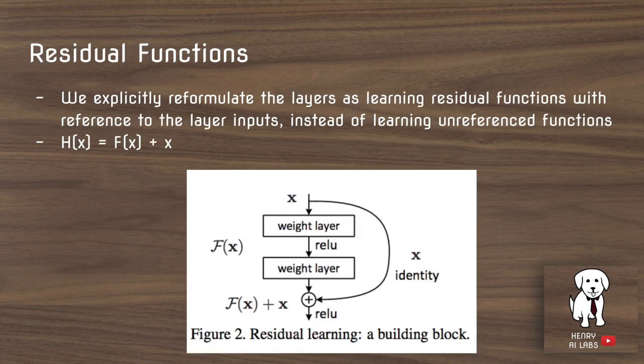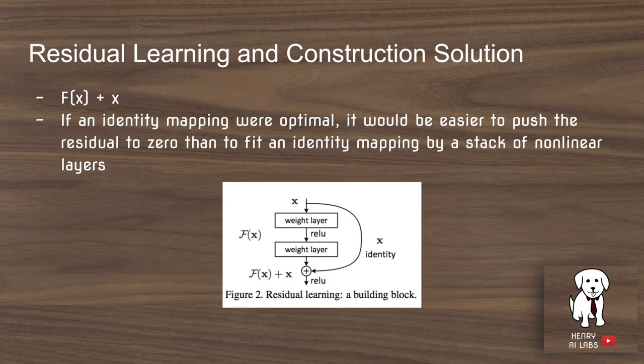However, identity functions aren't an easy function to learn. Therefore, the residual functions formulate the layers as having a reference to the input through these identity or skip connections, such that theoretically, if it needed to push the layer down to zero, it could easily do it in this framework. This shows the residual connection, which is the building block for the residual network, or ResNet.